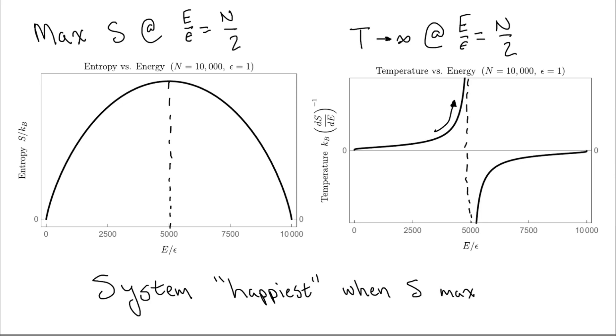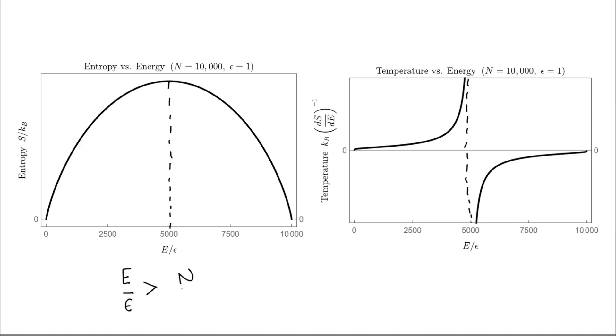Now, the interesting part is where there are more particles in the excited state than in the ground state. This phenomenon is known as a population inversion, and this is when the temperature is negative.